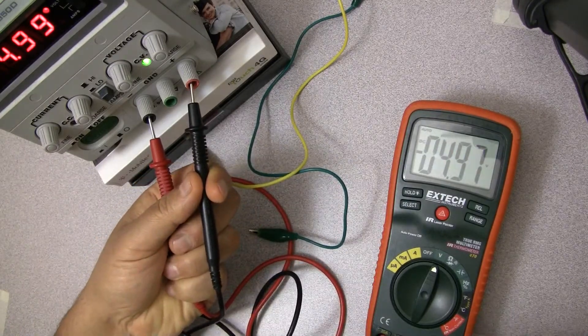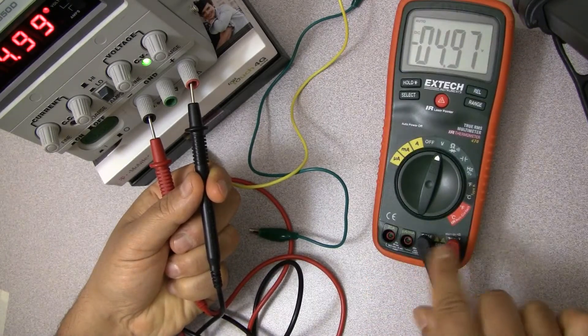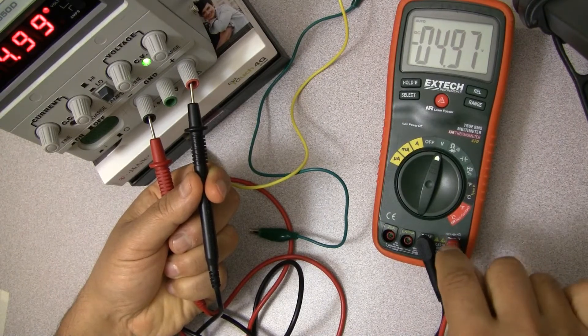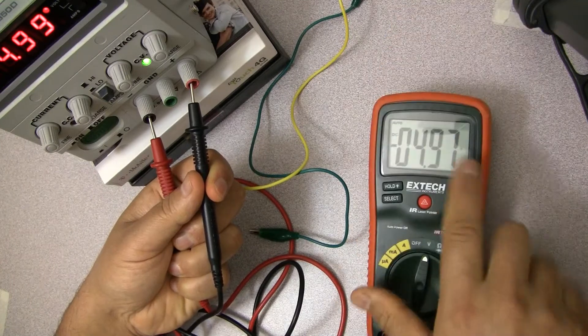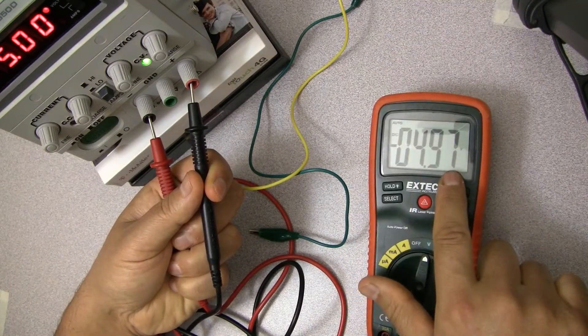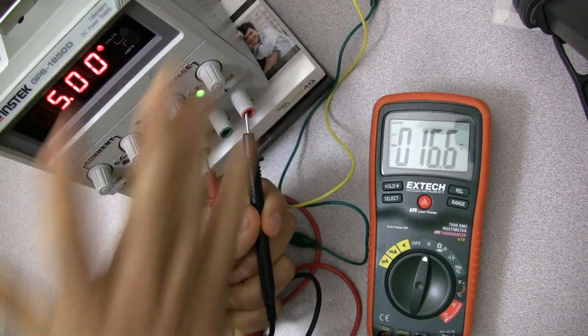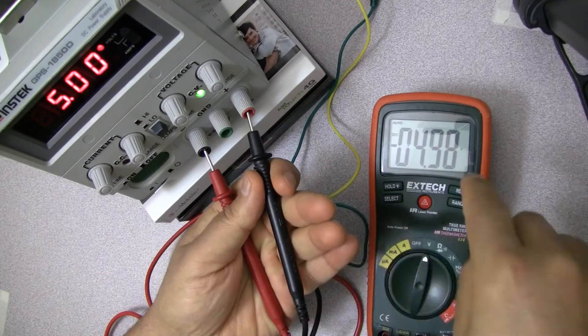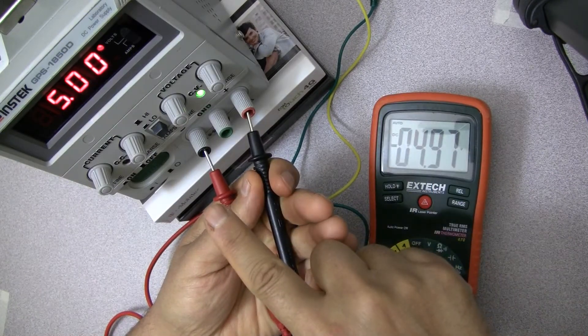So I'm going to put this in here and notice from ohm to volt, I did not change how these guys are plugged in because the red one for volt, ohm and all that goes in here. So when I plug this in, it reads 4.97. So the multimeter says 4.98 volts, the power supply says five.